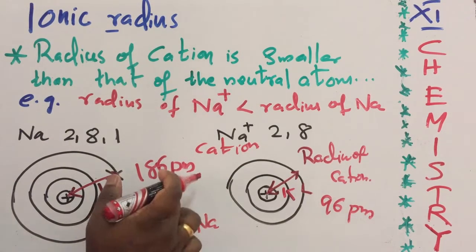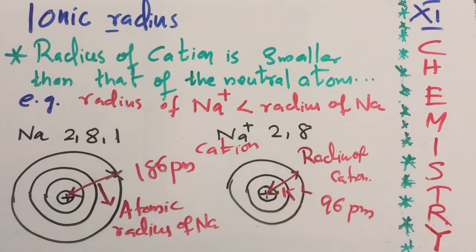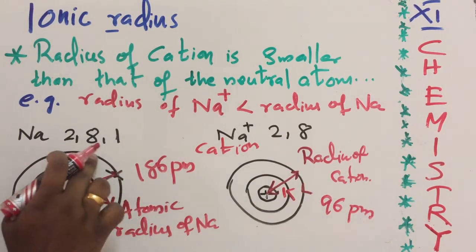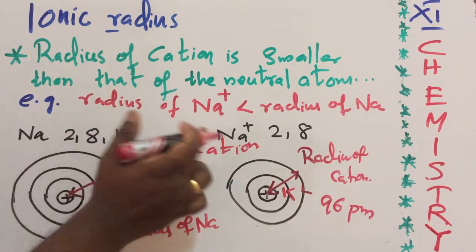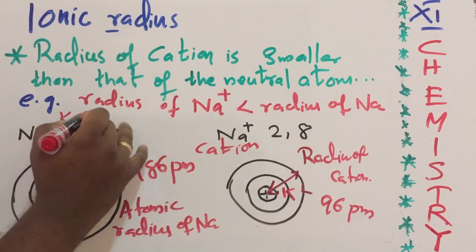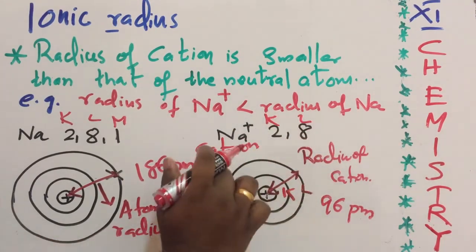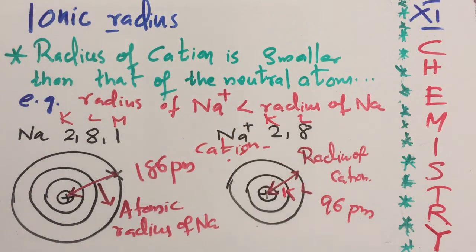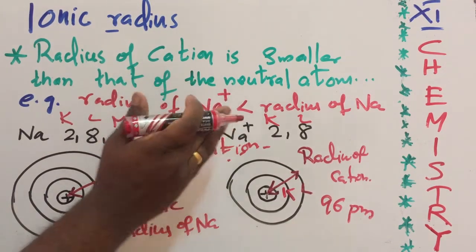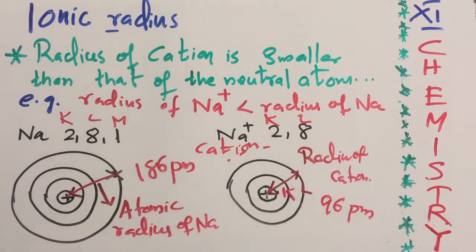Why does the radius decrease in a cation? Because one complete shell is removed due to the loss of electrons. In sodium, there are 3 shells: K, L, and M. But in Na+, there are only K and L — one shell is completely removed. Therefore, the radius of a cation is generally always smaller than the parent neutral atom.